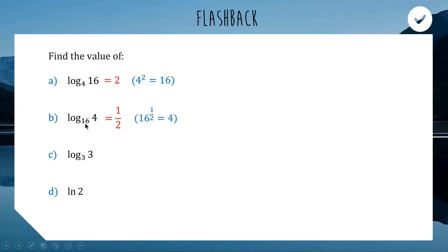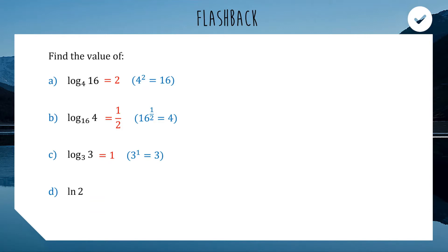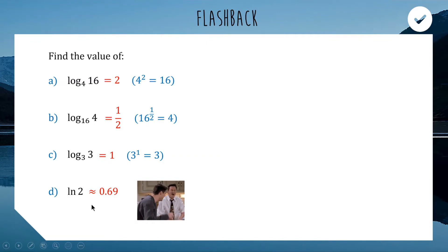For question c, we're asking: 3 to the power of what gets us an answer of 3? This one is 1 — when your base and your subject match in your logarithm, you get an answer of 1 every single time. And the last one, ln 2 — from last video we talked about how ln stands for logarithm natural, so this means log base e of 2. You can type in ln 2 on your calculator and get an answer of about 0.69, which means e to the power of 0.69 will get you roughly 2.